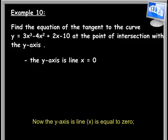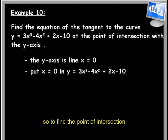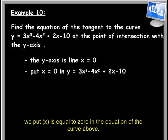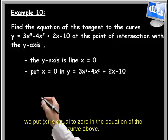Now the y-axis is line x equals 0, so to find the point of intersection we put x equals 0 in the equation of the curve above.